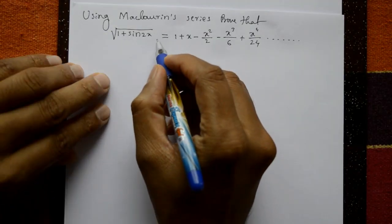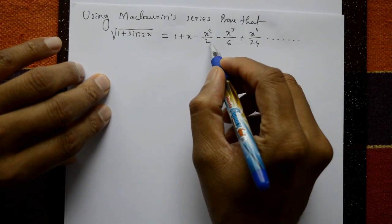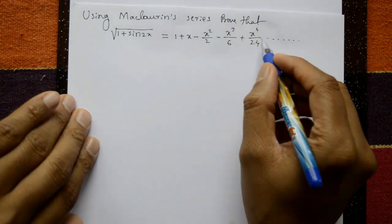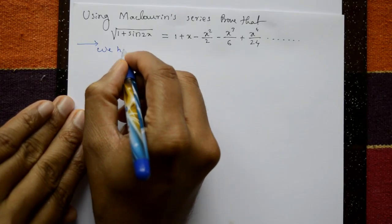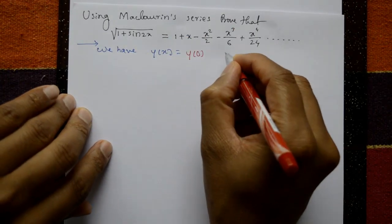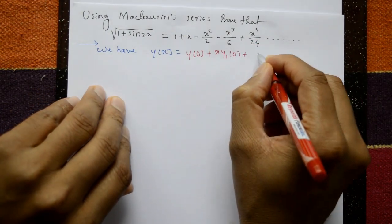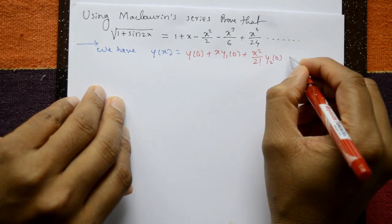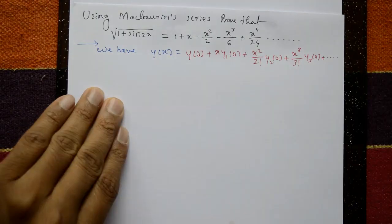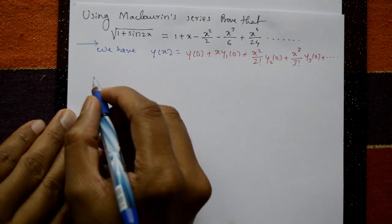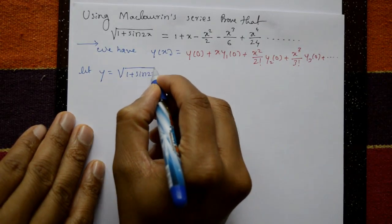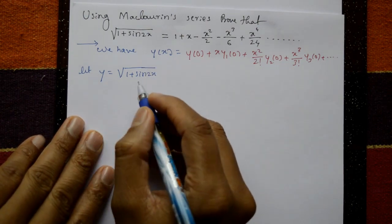Next problem: prove that √(1 + sin 2x) = 1 + x − x²/2 − x³/6 + x⁴/24 and so on. We use Maclaurin's series: y(x) = y(0) + x·y1(0) + x²/2! · y2(0) + x³/3! · y3(0) + ... Let y = √(1 + sin 2x).